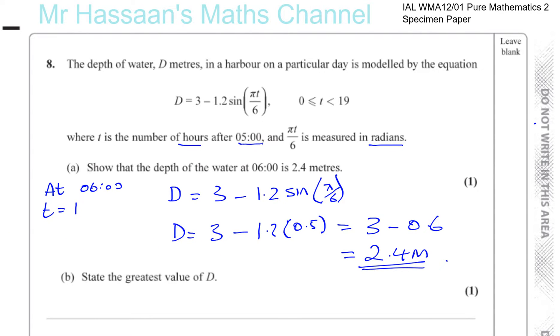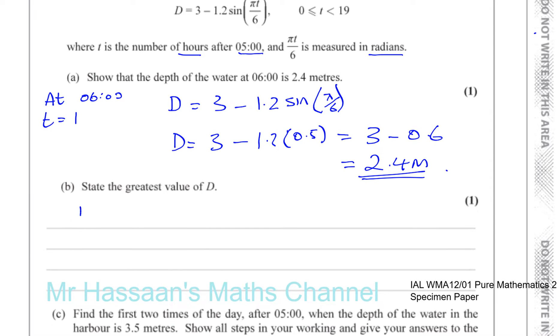Part (b): State the greatest value of D. We know that D equals 3 minus 1.2 times sine pi t over 6. Now it says state, so they don't want any explanation. You have to write D equals and give the biggest possible value of D. What we know is that this value of sine pi t over 6, the maximum value it can reach is 1 and its minimum value is minus 1.